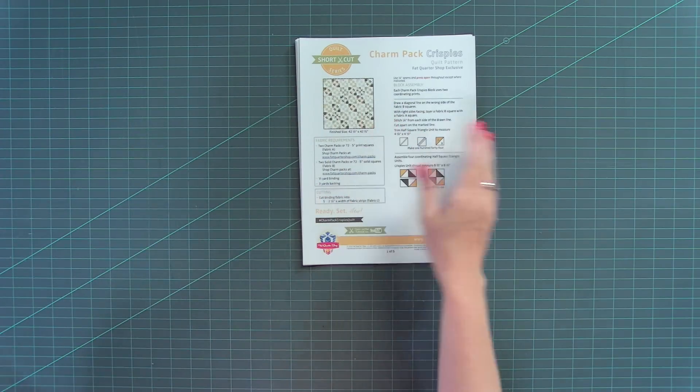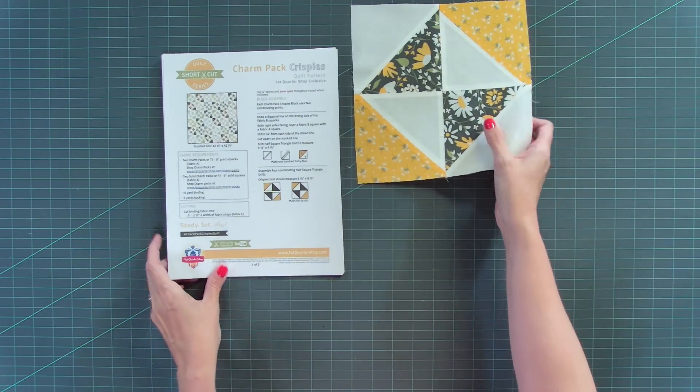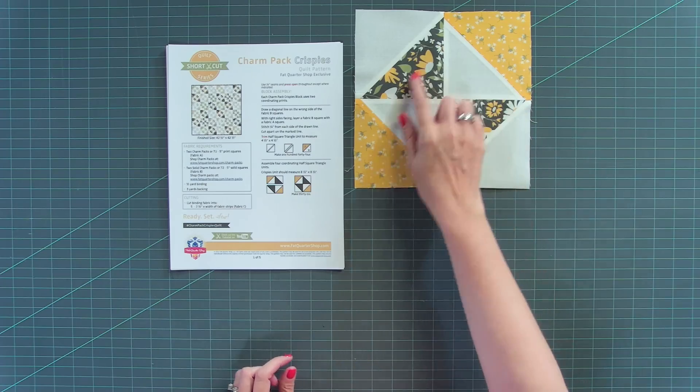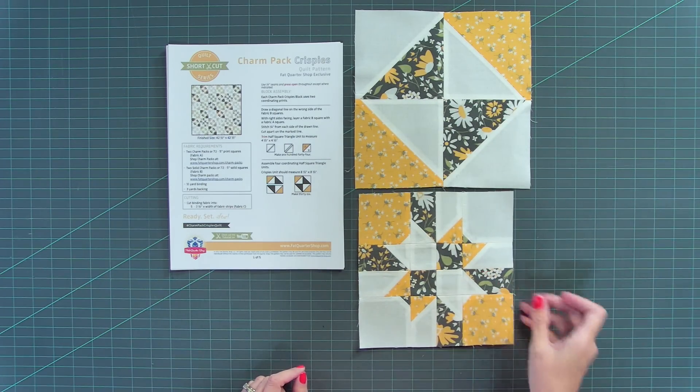This is how the pattern looks when you download it. And it's gonna be really awesome what we do because if you can make four half square triangles, sew them together, you're gonna quickly turn that into this. Let's get started and let me show you an awesome way to turn half square triangles into this Charm Pack Crispies block.